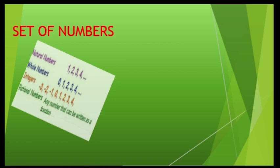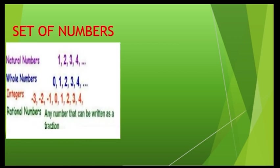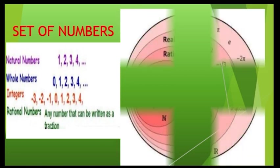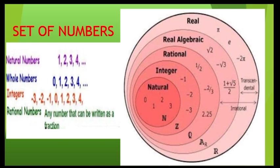Now, what do we mean by the set of numbers? It consists of: natural numbers, that is 1, 2, 3, 4, and so on; whole numbers, which start from 0, 1, 2, 3, 4, and so on; integers, which include both positive and negative values; and rational numbers, which include any number that can be written as a fraction. But in integers, fractions are not included.